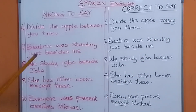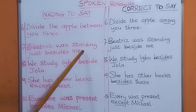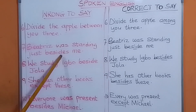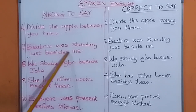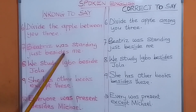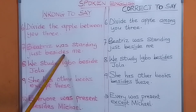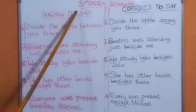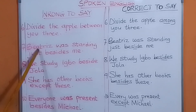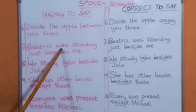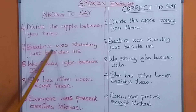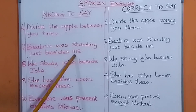Let's continue. Number seven: 'Beatrice was standing just besides me.' This uses 'besides' — it is wrong to say 'Beatrice was standing just besides me.' Don't say that.